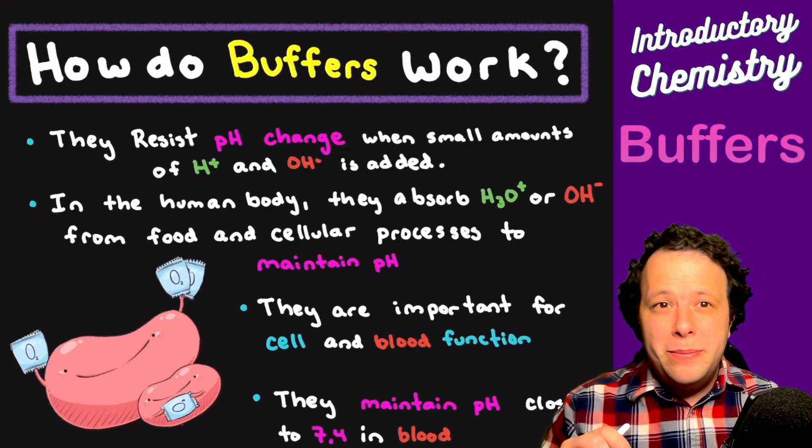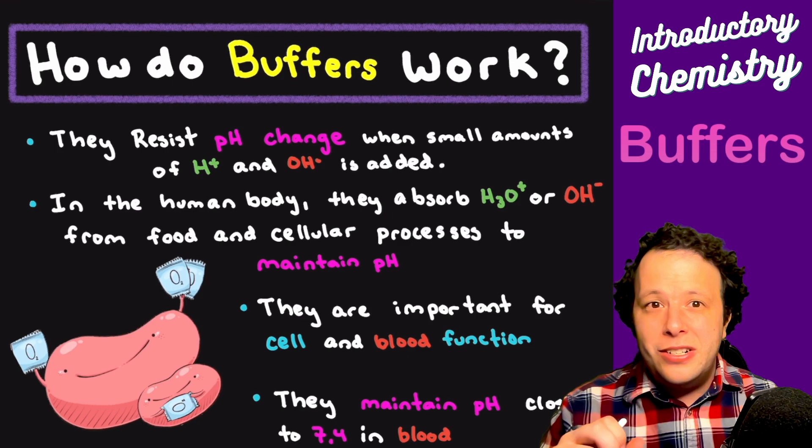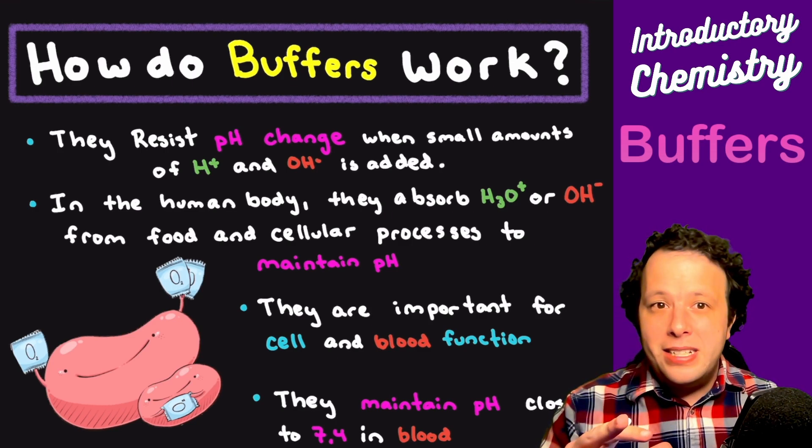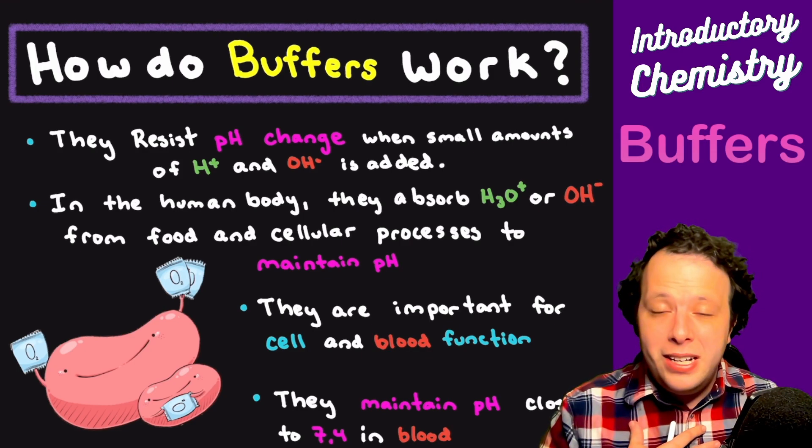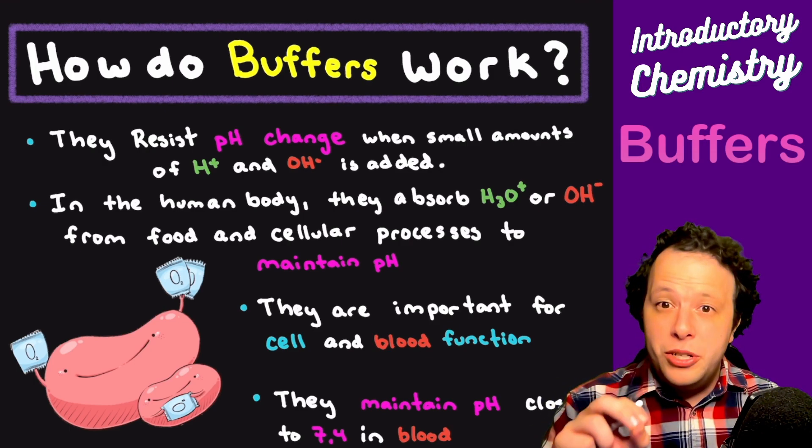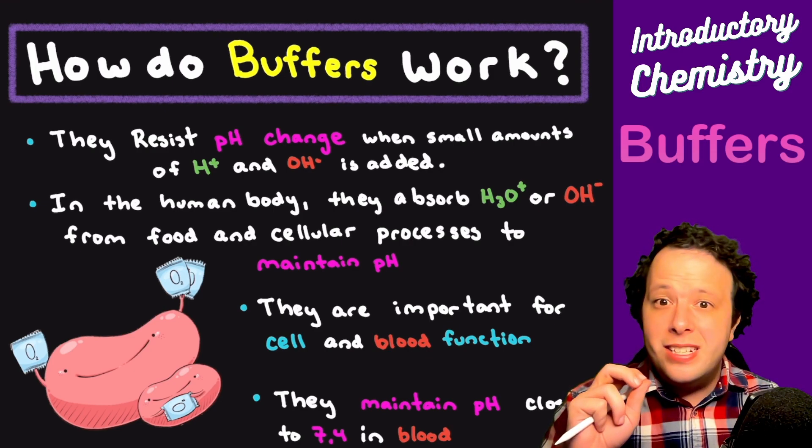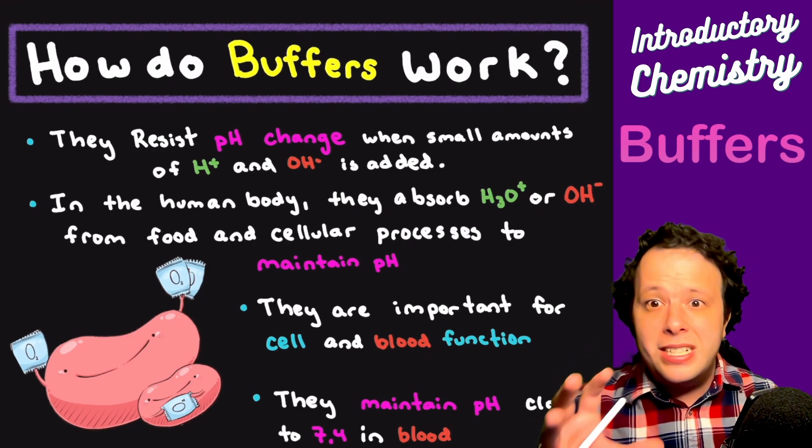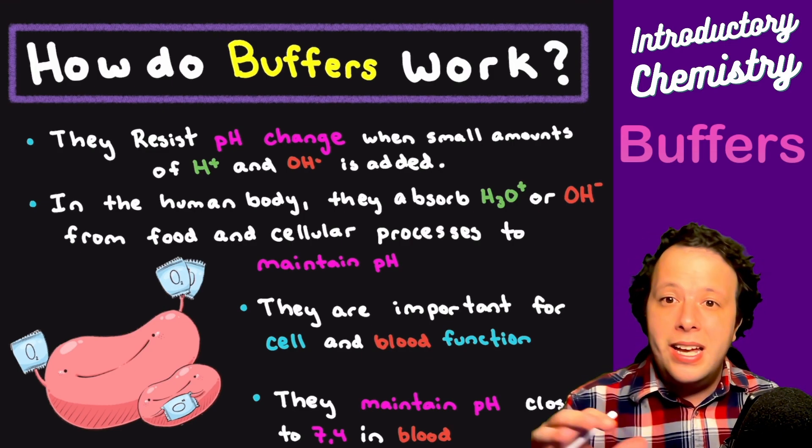Buffers essentially resist pH change when we add acids or bases. This is extremely important when it comes to the human body. The body has natural buffer systems built into it to help preserve cellular and body function. The main reason is because all the food and drinks and beverages you eat and drink are all very acidic and very basic and will affect the pH balance of your system.